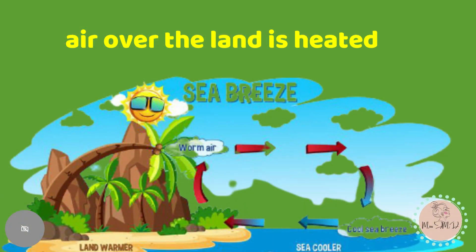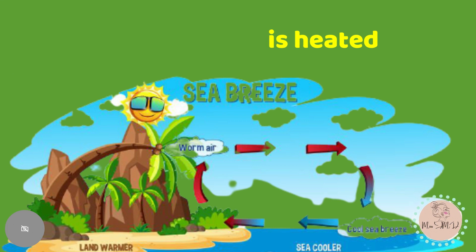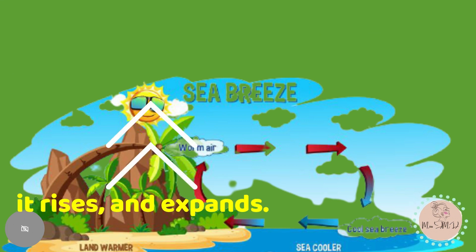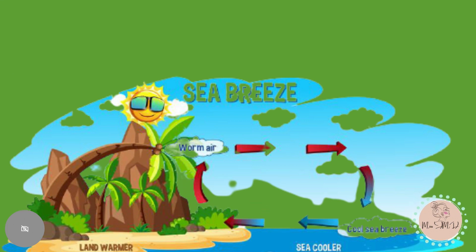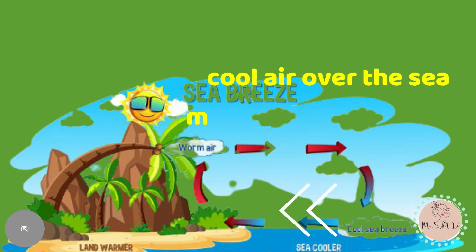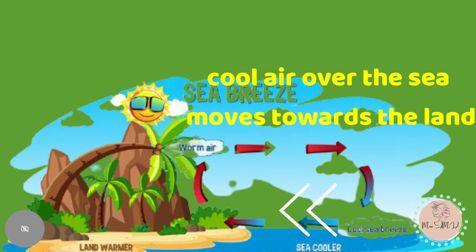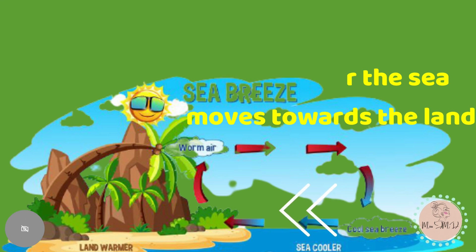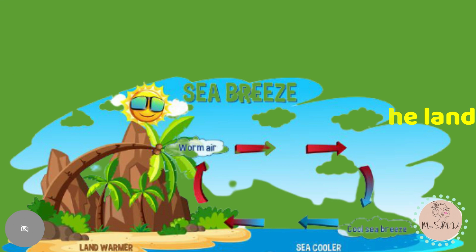Convection is also true with wind and breezes. Warm air rises, expands, and cools; cool air sinks. Convection is the reason why we have wind movements and local breezes. During daytime, air over the land is heated — it rises and expands, and cool air over the sea moves toward the land. That's why you feel a refreshing breeze by the seaside during daytime.